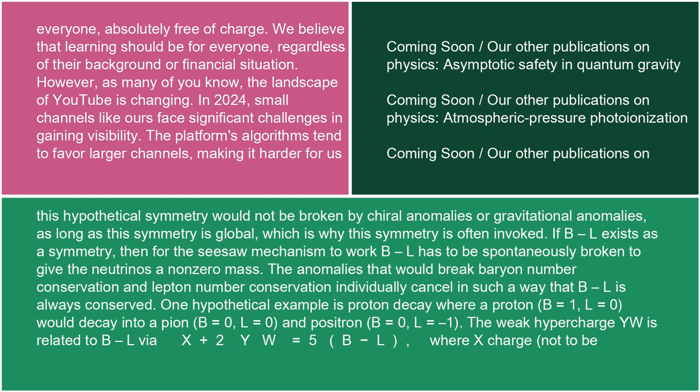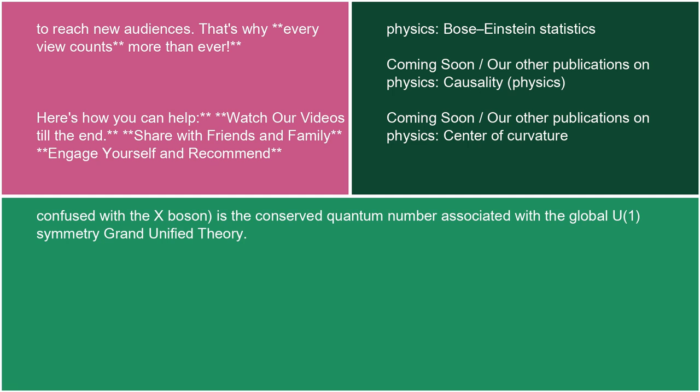The weak hypercharge Y_W is related to B-L via X + 2·Y_W = 5·(B minus L), where the X charge — not to be confused with the X boson — is the conserved quantum number associated with the global U(1) symmetry of grand unified theory.